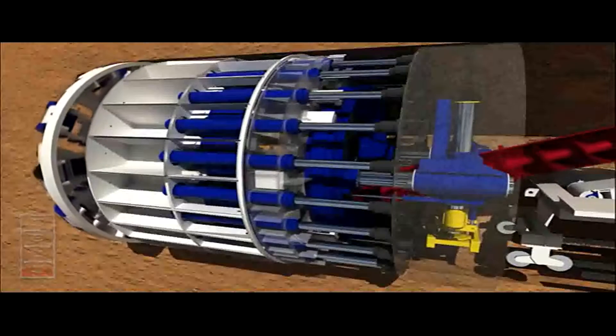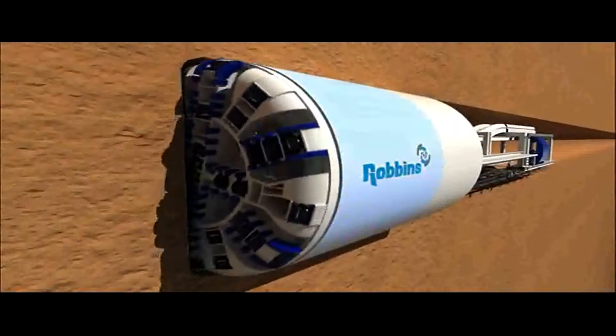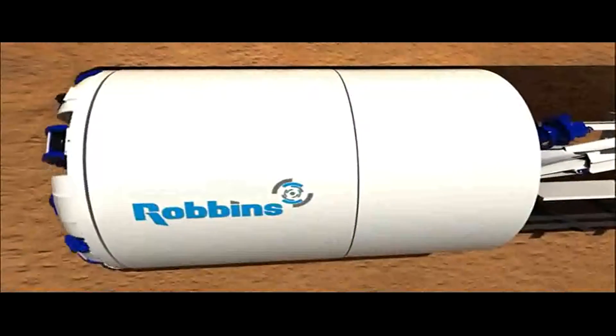The EPB cutter head is followed by a shield body. The shield body may be divided into a front and rear section for when the machine requires articulation during curved tunnel drives.